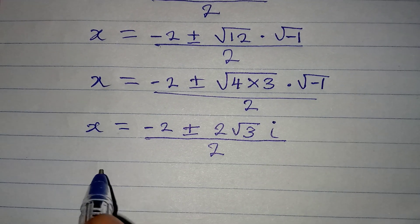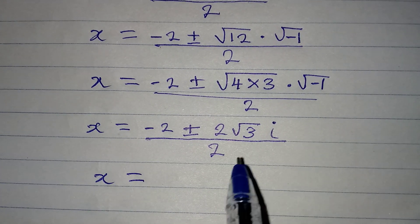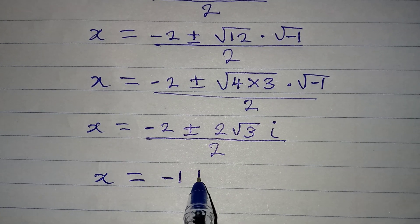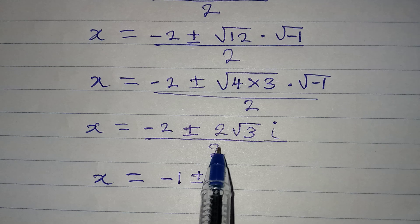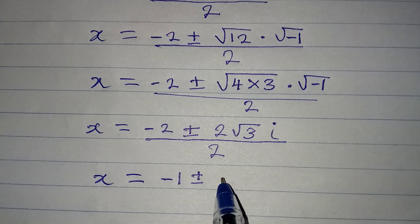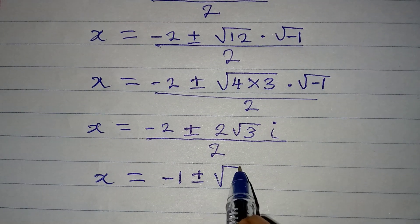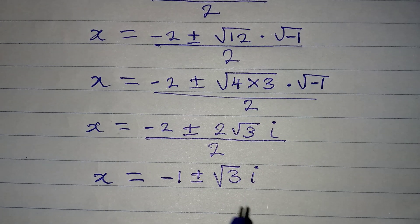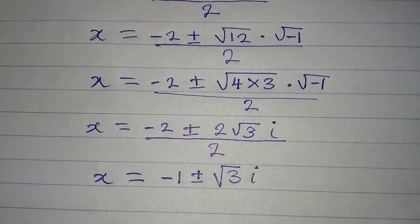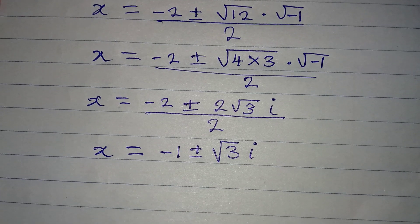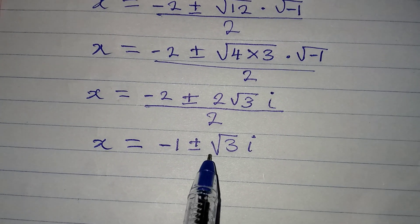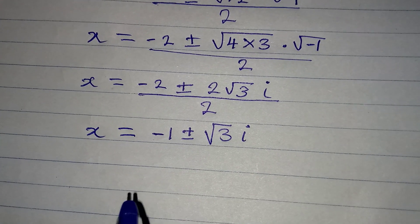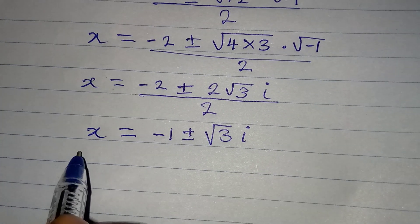So x = (−2 ± 2√3 i) / 2. Dividing through by 2: −2/2 = −1, and 2/2 = 1, so x = −1 ± √3 i. This is a two-in-one solution as I always say.